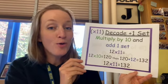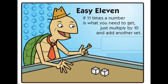Now I have a poem to go along with this strategy. This poem comes from our math curriculum. It's called Easy 11 by Eileen Fisher, illustrated by Tyson Smith. Easy 11. If 11 times a number is what you need to get, just multiply by 10 and add another set.